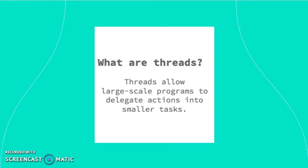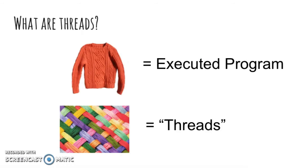To understand multi-threading we first have to understand what a thread is in a programming context. A thread in computer science is short for a thread of execution. Threads are a way for a program to divide itself into two or more running tasks. In a way, programming threads are similar to the threads of any real-world clothing item. In a sweater, every thread serves a purpose and given the correct sewing of threads they come together to create a sweater correctly and efficiently.